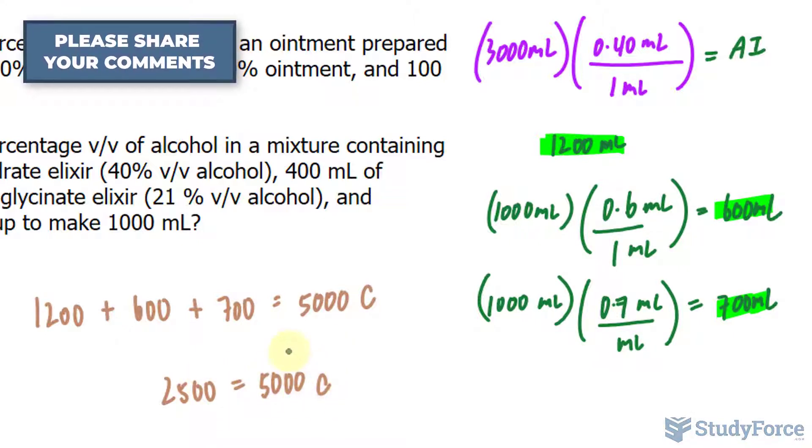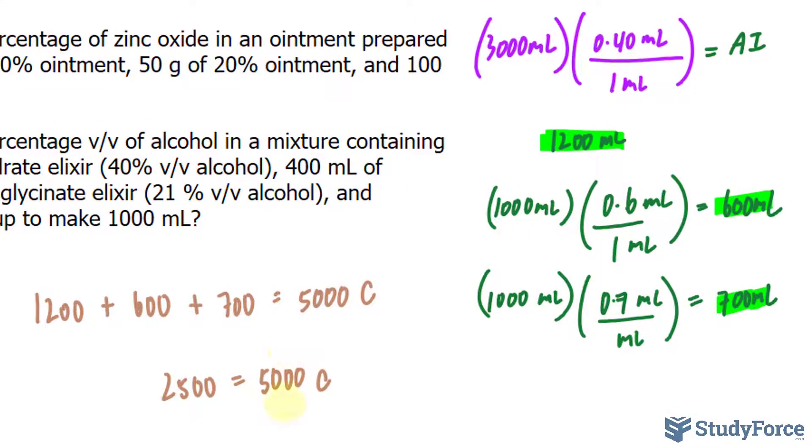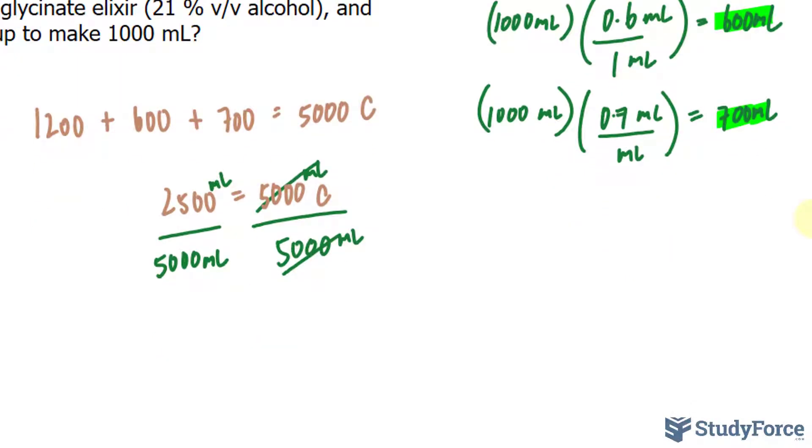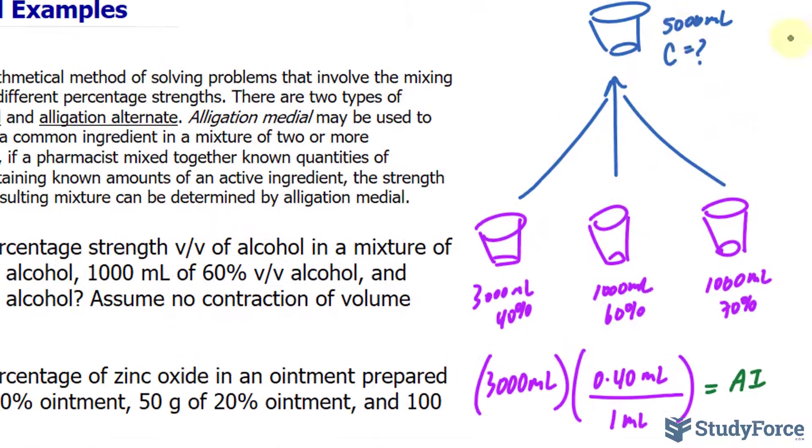To solve for C, it's a simple algebraic method by dividing both sides by 5000. It's actually 5000 milliliters of solution and 2500 milliliters of alcohol. And this will give us a concentration. 2500 divided by 5000 makes 0.5 milliliters of alcohol per 1 milliliter of solution. So that's the concentration of that container.